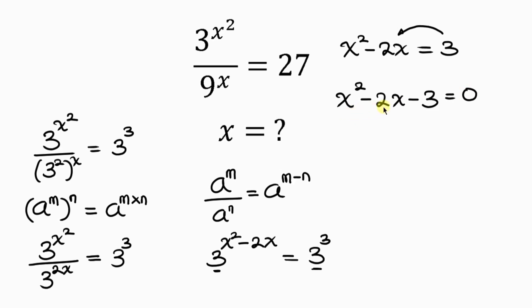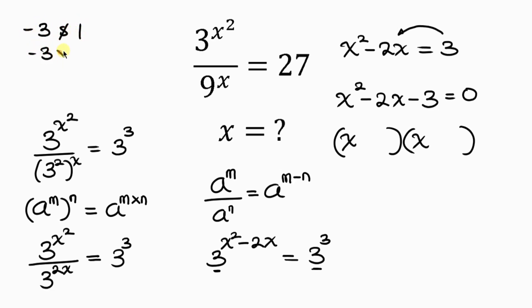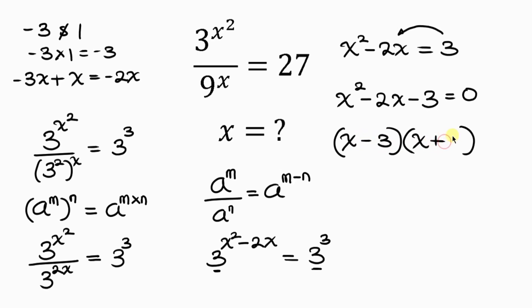This is a quadratic equation that can be factorized, so I'll be multiplying two brackets. Since I have x squared, that means x times x gives x squared. The factors of negative 3 that we're going to use are negative 3 and 1, because negative 3 times 1 gives negative 3, and negative 3x plus x gives negative 2x — the middle term. So we're using negative 3 and positive 1.